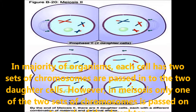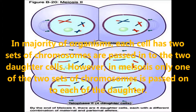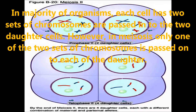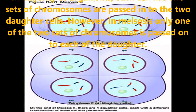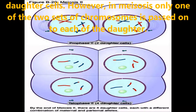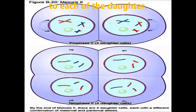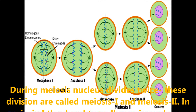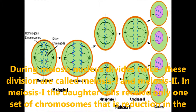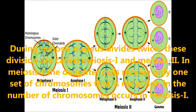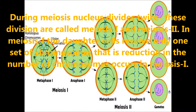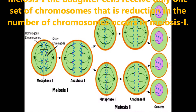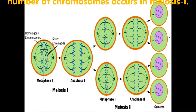In the majority of organisms, each cell has two sets of chromosomes. However, in meiosis only one of these two sets of chromosomes is passed on to each daughter cell. During meiosis 1, the daughter cell receives only one set of chromosomes — that is, the reduction in the number of chromosomes occurs in meiosis 1.